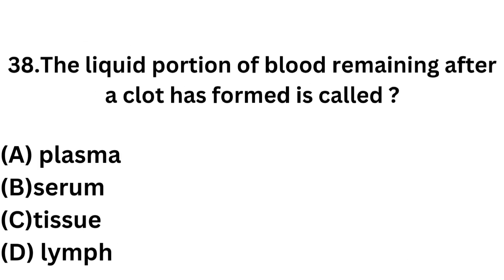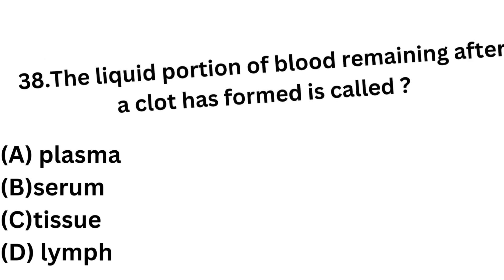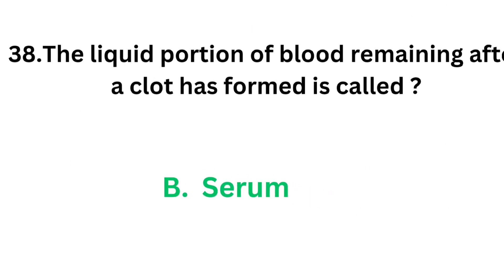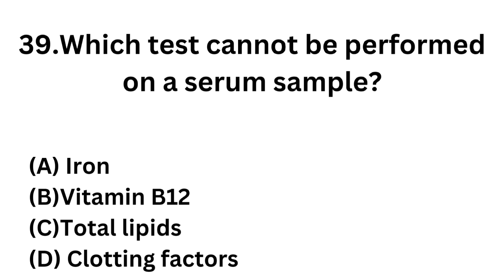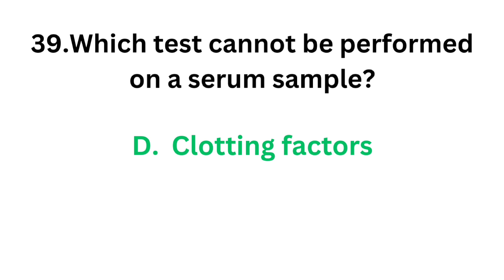Question number 38: The liquid portion of blood remaining after a clot has formed is called — Option A: Plasma. Option B: Serum. Option C: Tissue. Option D: Lymph. The correct answer is Option B, serum. Serum is the liquid part of blood after clotting. Question number 39: Which test cannot be performed on a serum sample? Option A: Iron. Option B: Vitamin B12. Option C: Total lipids. Option D: Clotting factors. The correct answer is Option D, clotting factors. Serum sample is devoid of clotting factors, so that test cannot be performed on a serum sample.